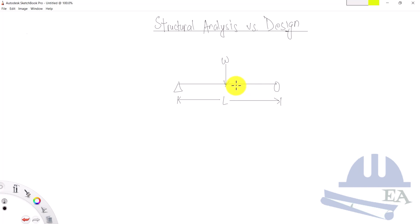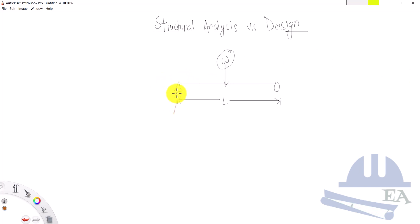When there is no load W acting on the beam, nothing happens. But once you apply the load, the structure reacts and generates internal forces. It also gives reactions at the supports. At the hinge support there are two reactions — one upward and one horizontal. At the roller support there is only one reaction, which is the upward reaction.